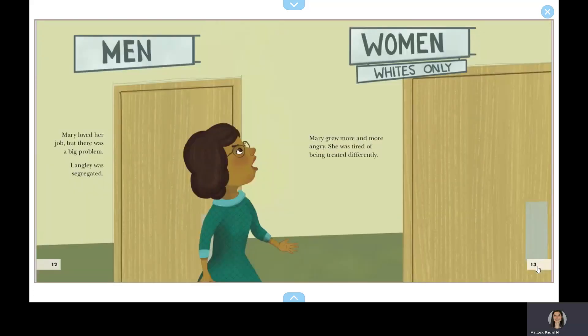Mary loved her job, but there was a big problem. Langley was segregated. Mary grew more and more angry. She was tired of being treated differently.